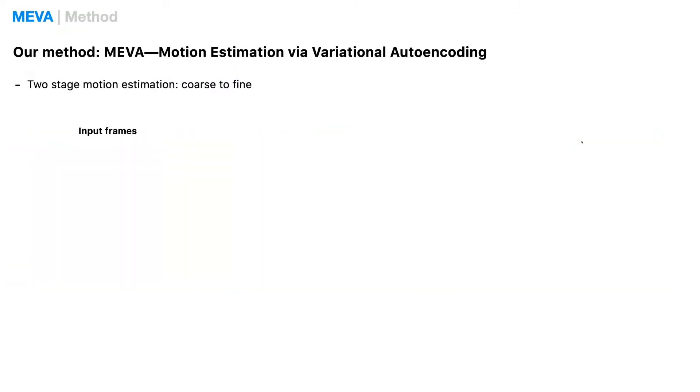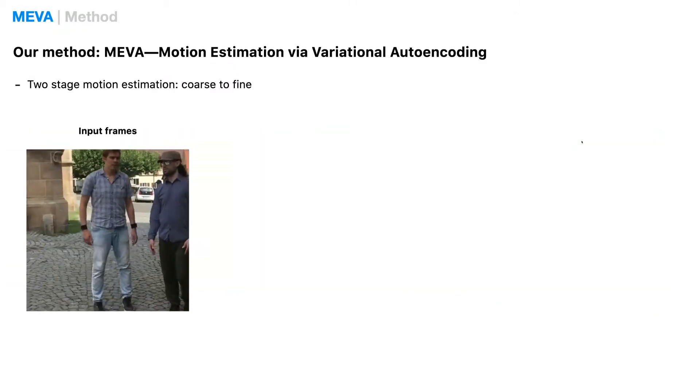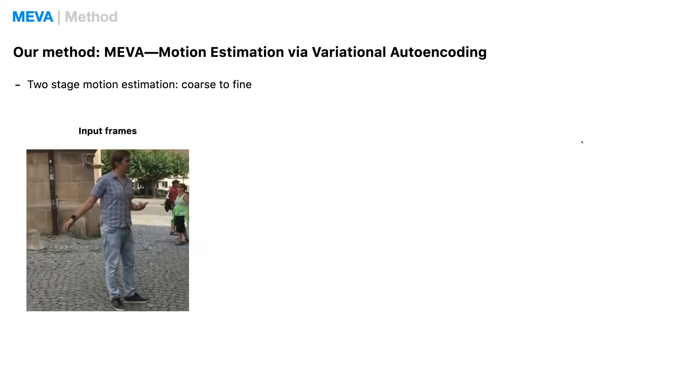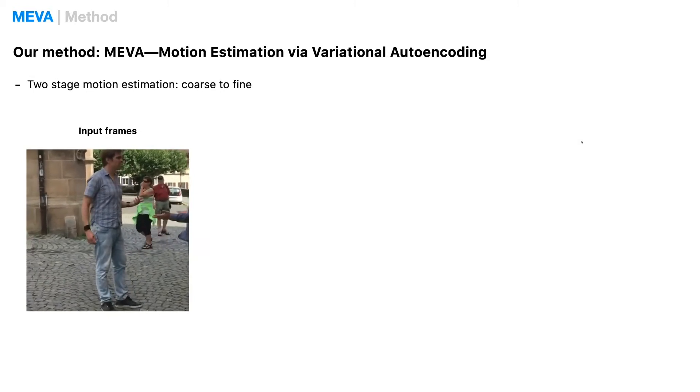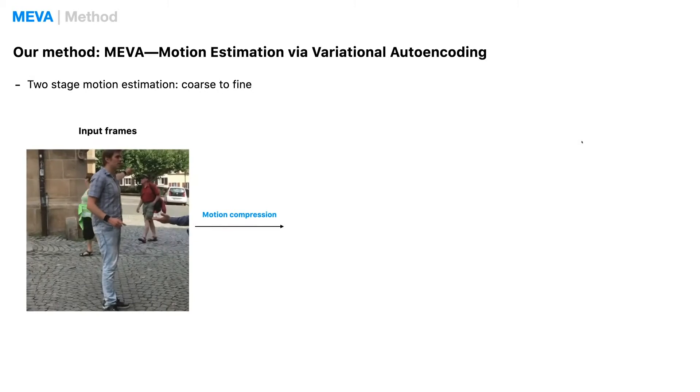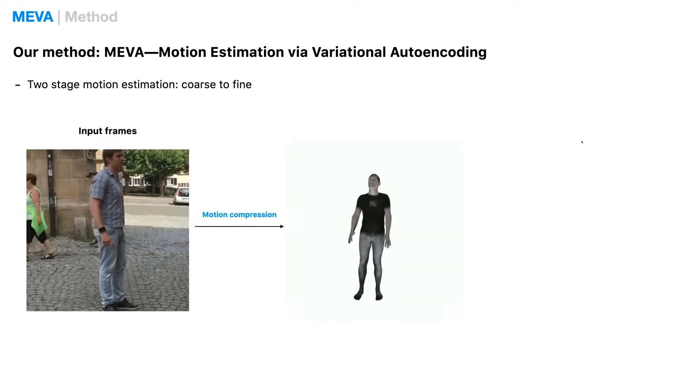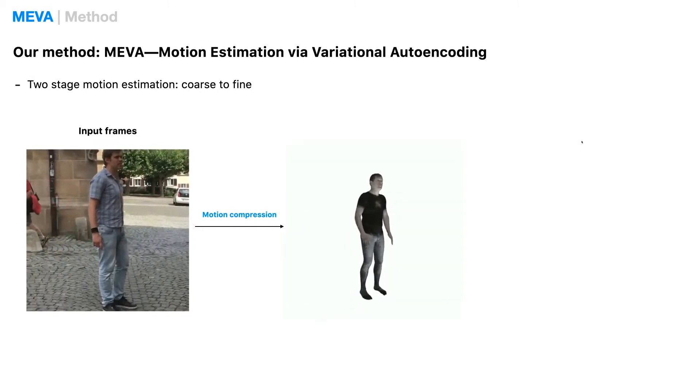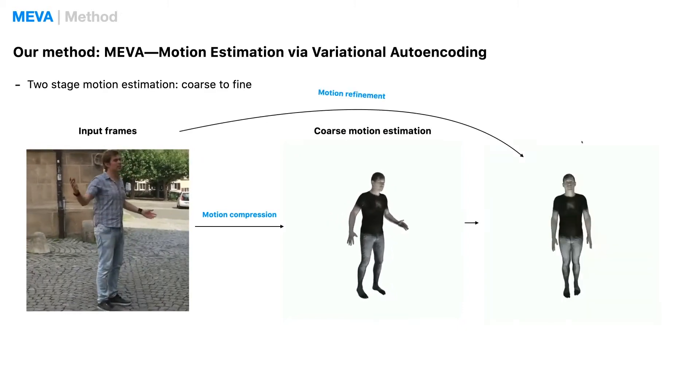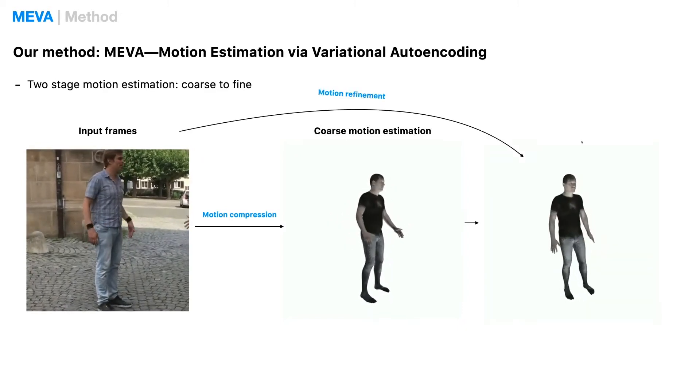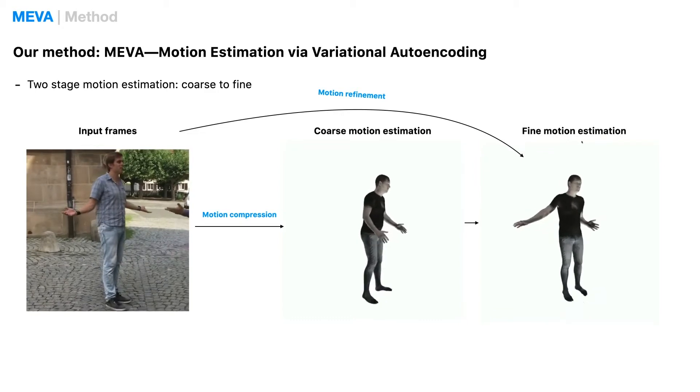To tackle this issue, we developed a novel two-stage method which breaks down human motion estimation in a coarse-to-fine manner. Given an input video, our method first generates a coarse estimation of the overall motion through motion compression, and then refines it against image evidence to come up with a final fine estimate.